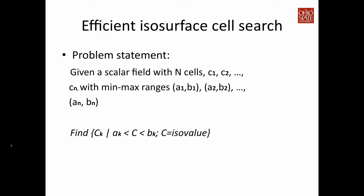Here is the formal problem statement of the isosurface search algorithm. Given a scalar field with n cells c1, c2 to cn, and assuming we know each cell's minimum and maximum value ranges — where a1 is the minimum value and b1 is the maximum value for the first cell — what we are trying to do is find all the cells ck where the minimum value ak is less than the iso value and the maximum value bk is greater than the iso value. Here c is the iso value that we use to define the isocontour.